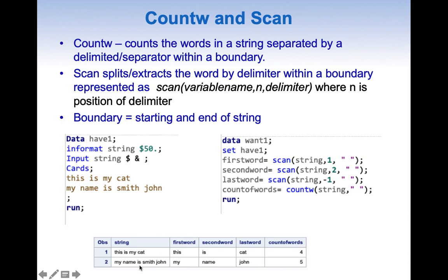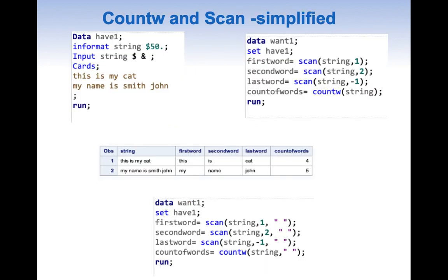In the same fashion, when the string value is 'My name is Smith John', giving minus one starts from the end of the string, moves left till the first delimiter, and extracts 'John'. Now that we have seen COUNTW and SCAN, let us simplify things. Here we have given the delimiter as blank space.